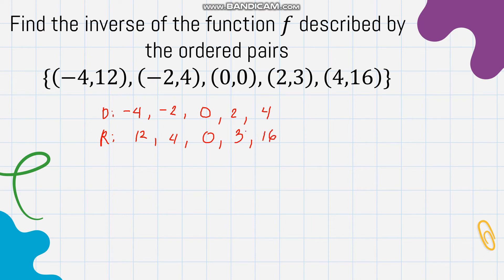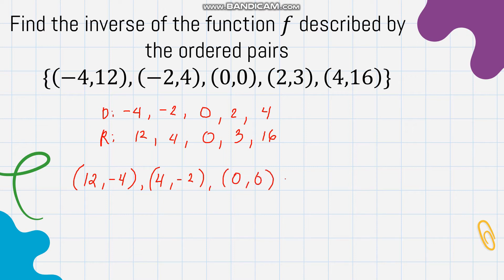If we write the inverse function, the domain becomes the range and the range becomes the domain. So the inverse is: (12, -4), (4, -2), (0, 0), (3, 2), (16, 4). We simply interchanged the values of the range and the domain.